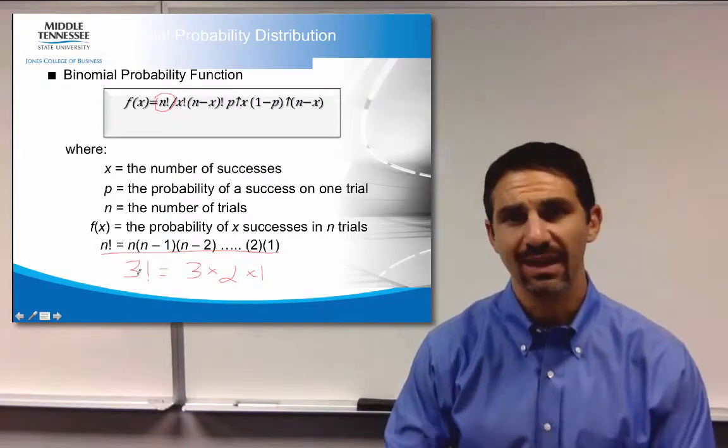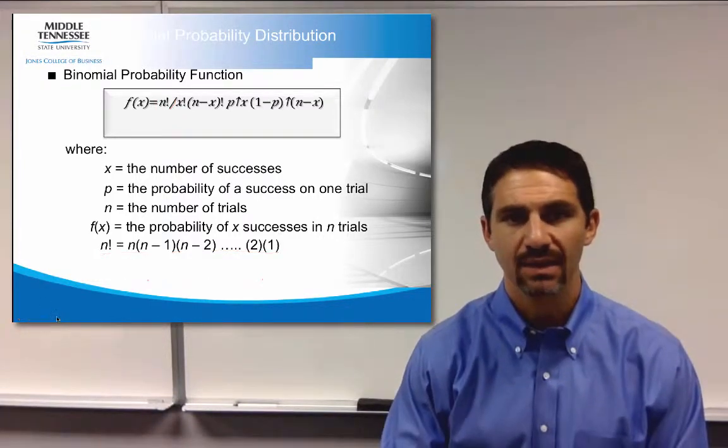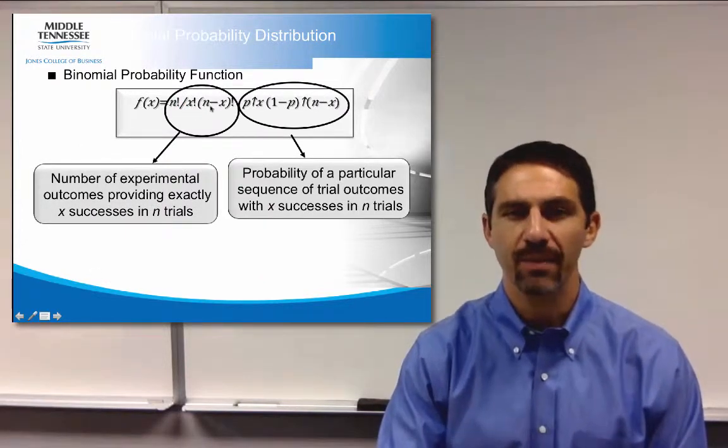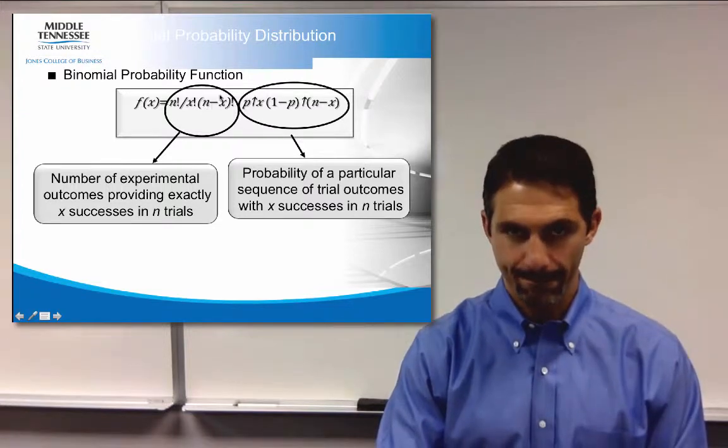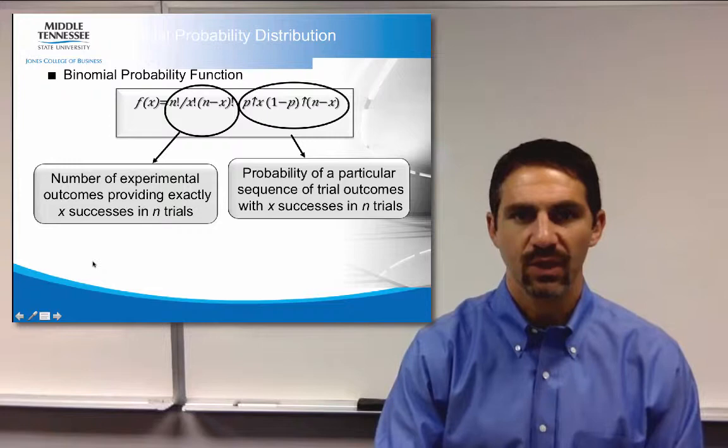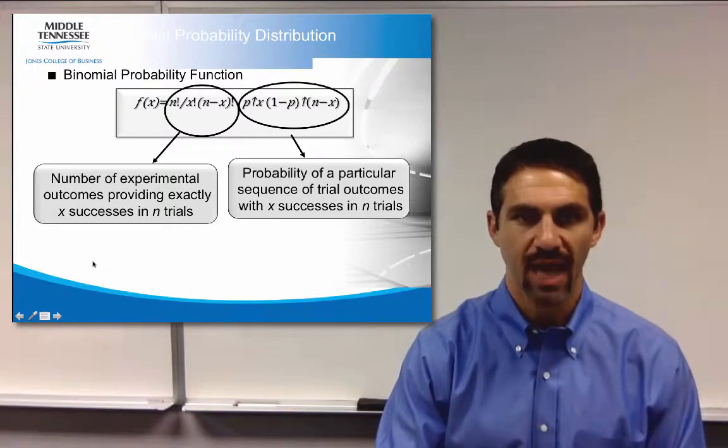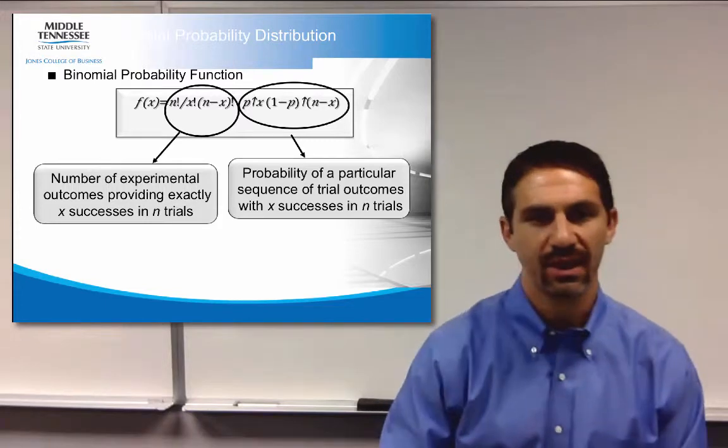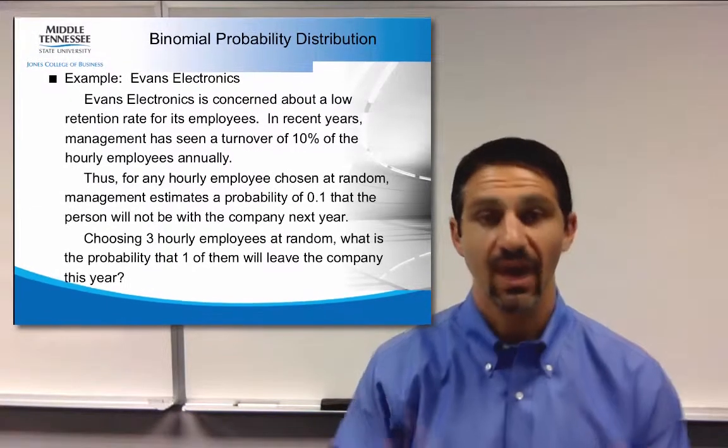So this formula, again, is a little bit, it looks a lot more difficult than it actually is. But what you're doing is you're coming up with the successes and the failures. And so what you're really trying to come up with is how many different possible combinations of successes and how many possible combinations of failures.